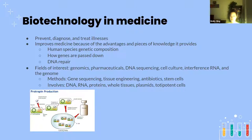Biotechnology can help predict whether a child will have a disease. For example, Down syndrome is something that scientists have come to be able to predict because of biotechnology. Also, we can actually repair DNA with biotechnology.